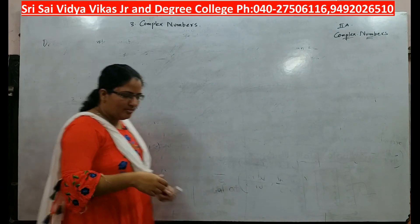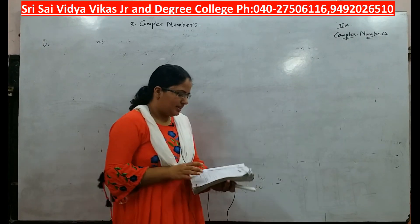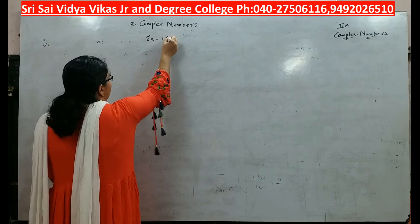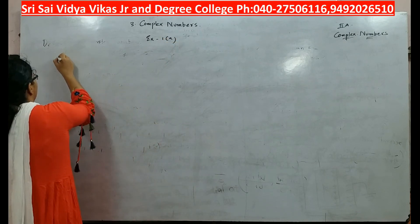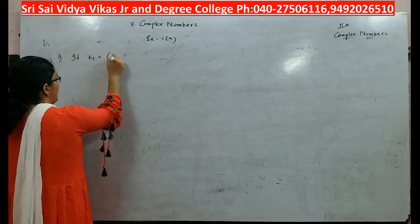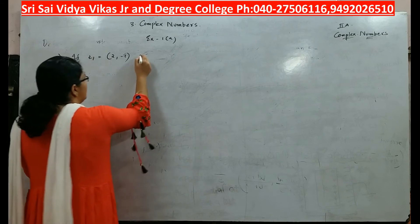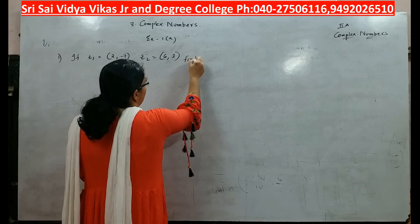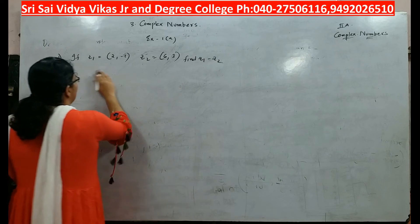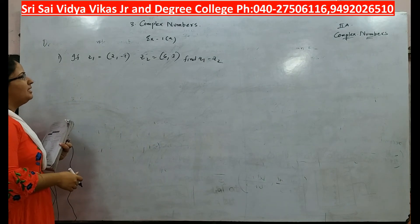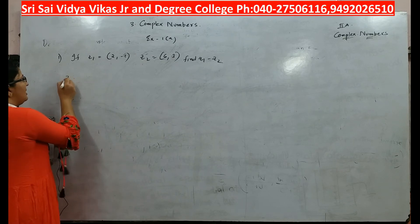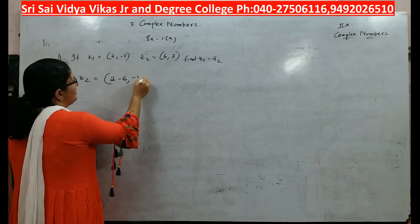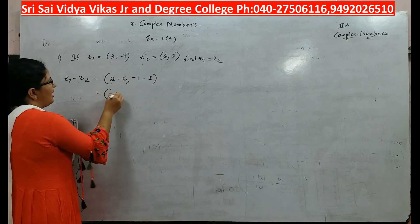Let us discuss the first problem in your chapter — Exercise 1a. If z1 is equal to (2, −1) and z2 is equal to (6, 3), find z1 minus z2. z1 is given as (2, −1) and z2 is given as (6, 3). You have to find z1 minus z2. z1 minus z2 is (2−6, −1−3), that is (−4, −4).